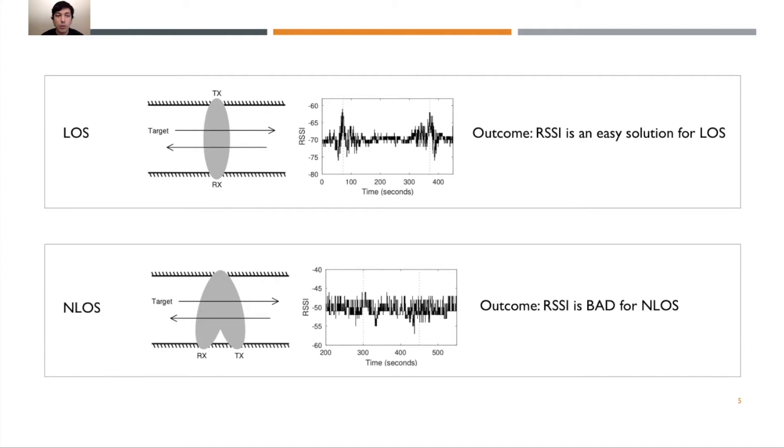On the other hand, if we look at non-line of sight, we can see there are two dotted lines that indicate a target walked by, but we do not see such a peak in our RSSI. The outcome is RSSI is bad for non-line of sight.